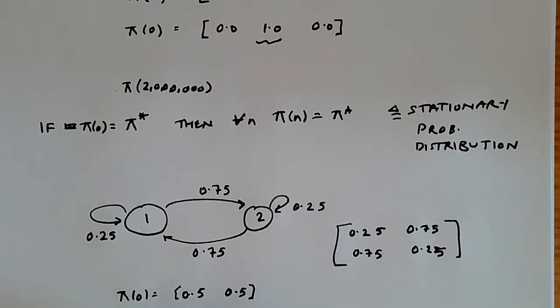Then π_1 is going to be given by the multiplication of this row vector, [0.5, 0.5], with this matrix over here, [[0.25, 0.75], [0.75, 0.25]].